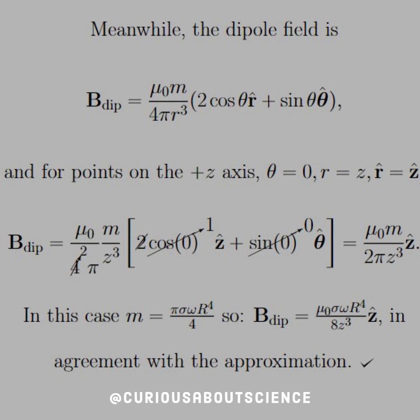And in this case, m is pi sigma omega R to the 4th over 4. So the magnetic field of a dipole is in agreement and thus a great approximation. And the dipole moment is much easier to find.